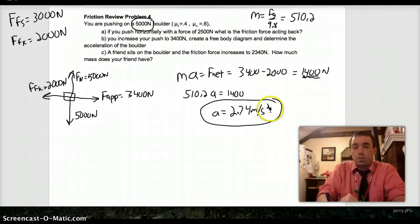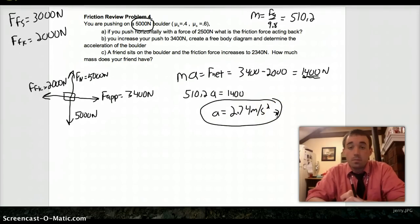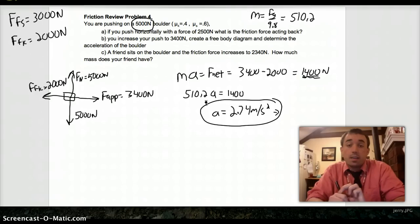2.74 meters per second squared. And, as drawn, you can say to the right. All right. So, free body diagram and acceleration. Perfect. Question C is a little different. We have a friend now sitting on the boulder, and the friction force increases to 2340. How much mass does your friend have?